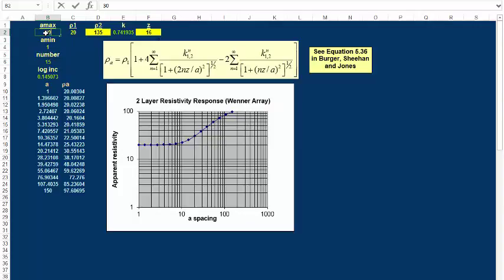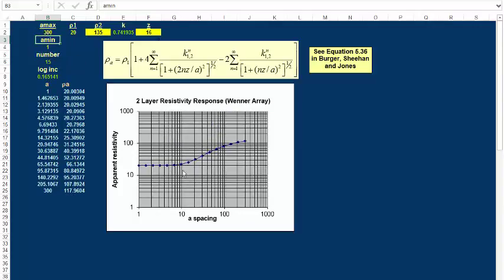As we increase the length of our array from an A spacing of 300 meters to an A spacing of 500 meters, we're getting here 117. If we go to 500, we're getting up to 127. We're still less than rho two.